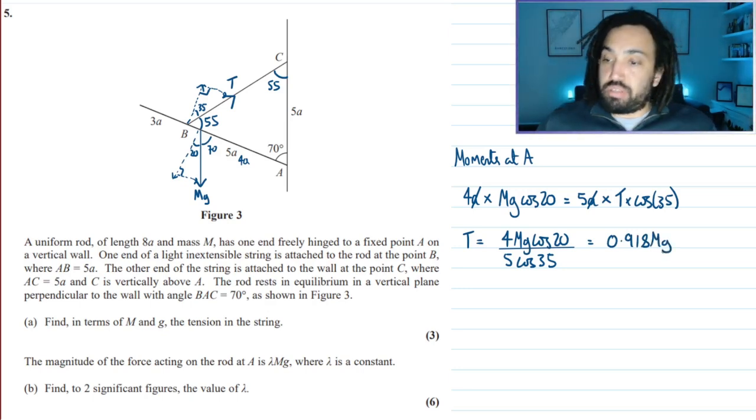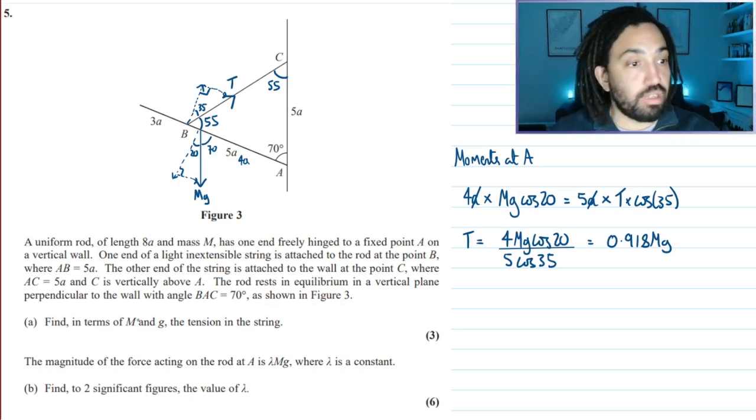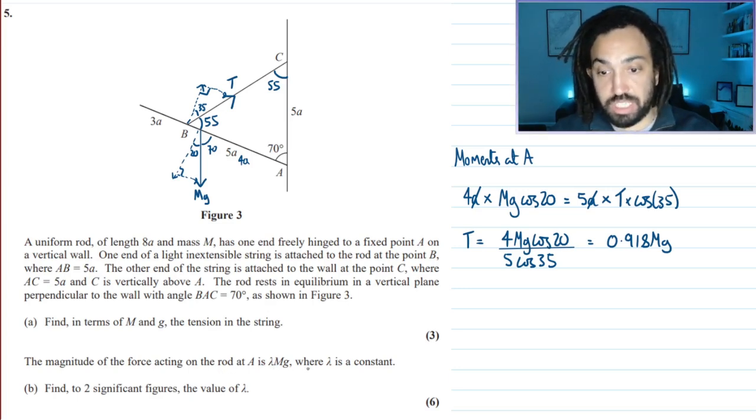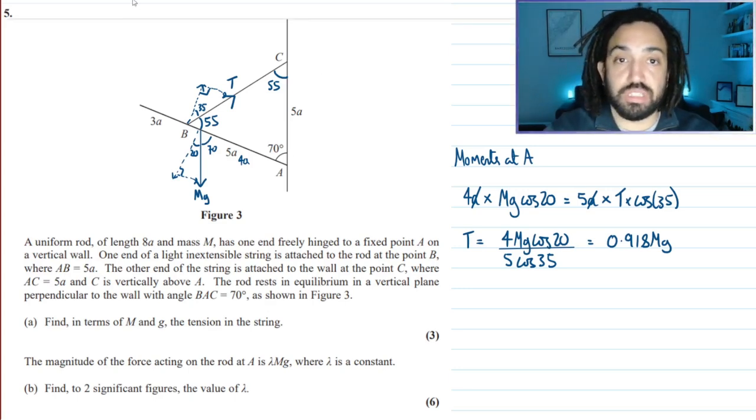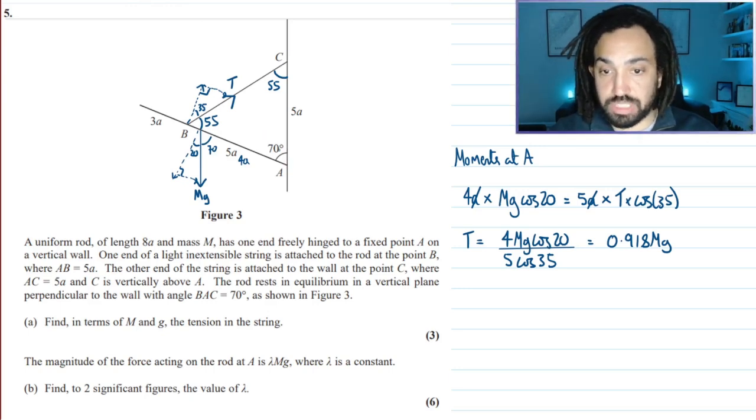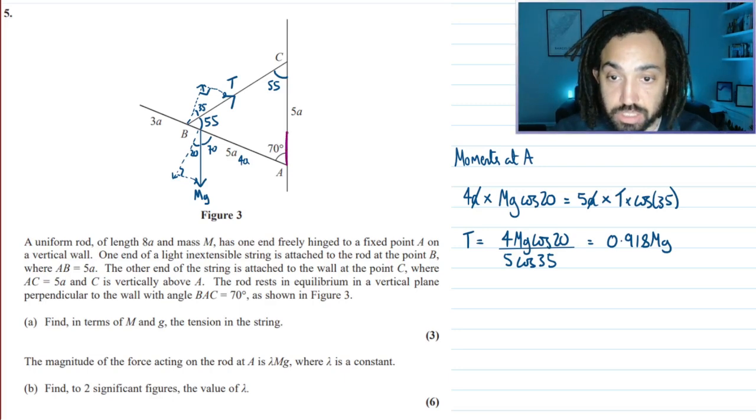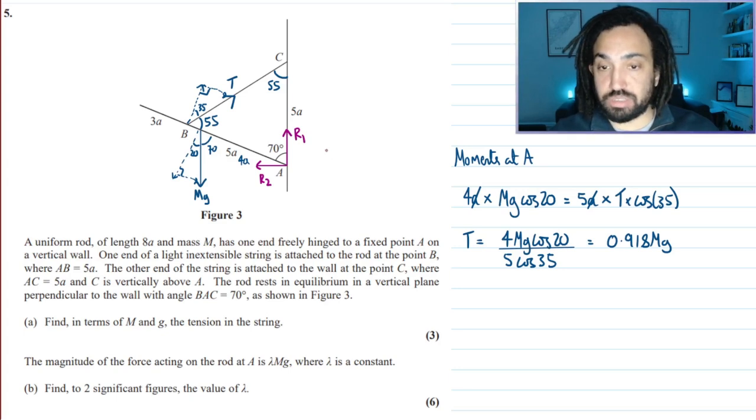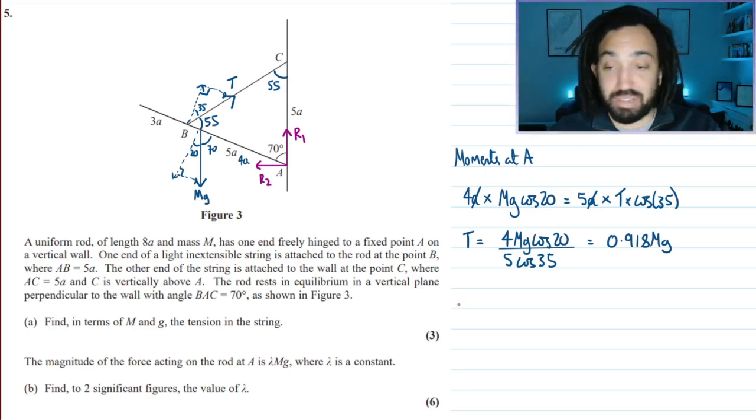That is the tension. Next it says find the magnitude of the force acting on the rod at A. The magnitude is λmg where λ is a constant, find it. Whenever we've got a reactional force happening at a hinge point, I'll draw one component going up, I'll call that R1, and then one component coming out. Because we're asked to find the magnitude, we need to find both of these and then do some Pythagoras to find the actual total magnitude. Once we've done moments at A, most likely we'll have to resolve vertically and horizontally.